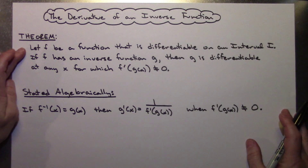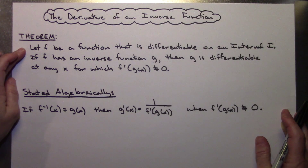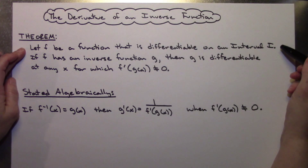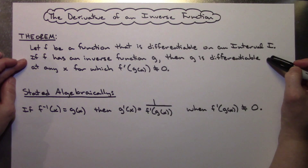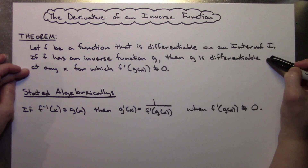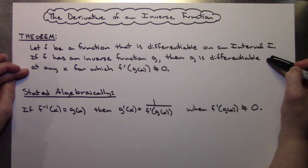Our theorem here says that we're going to let f be a function that is differentiable on an interval I. If f has an inverse function called g, then g is differentiable at any x for which f prime of g of x does not equal zero.